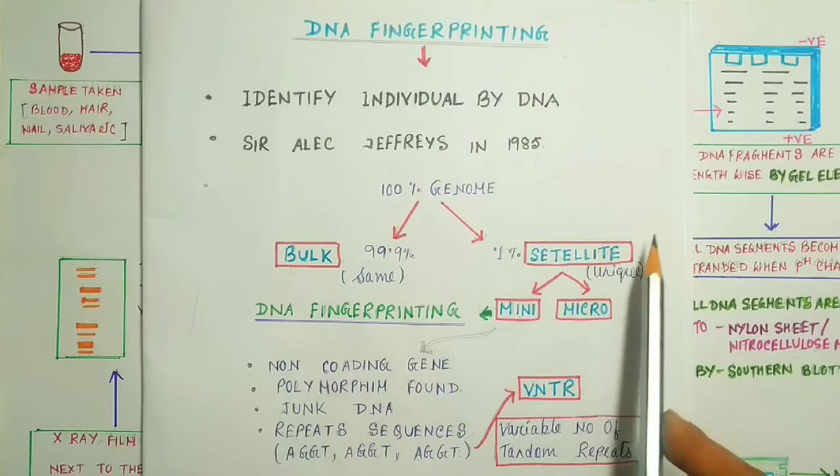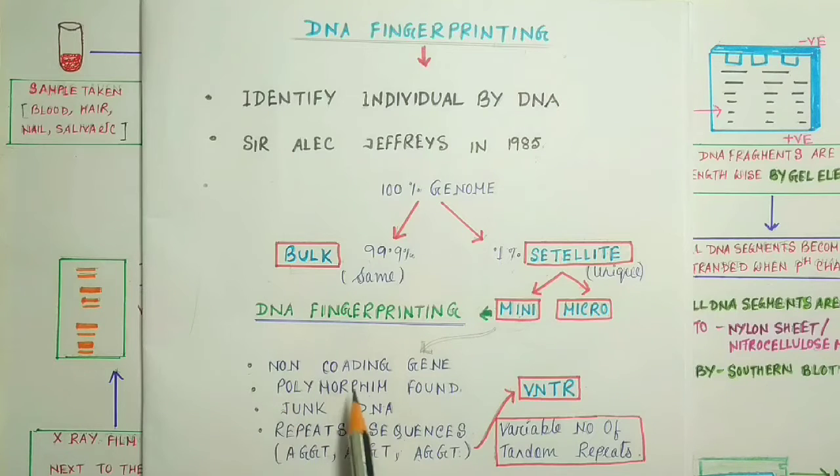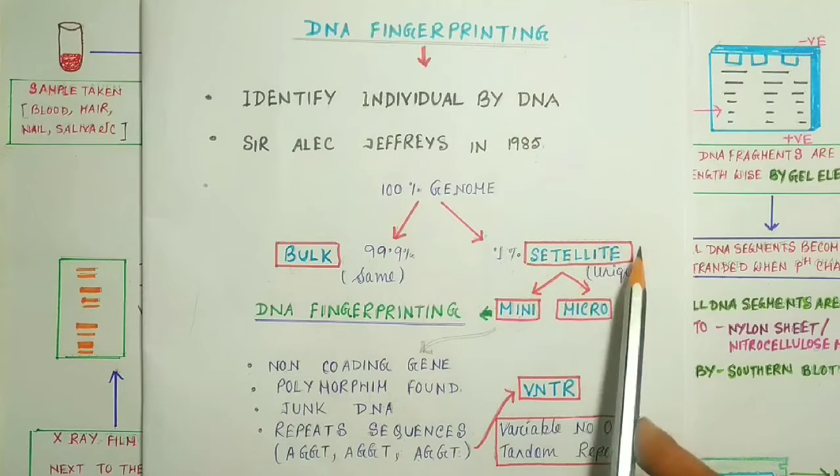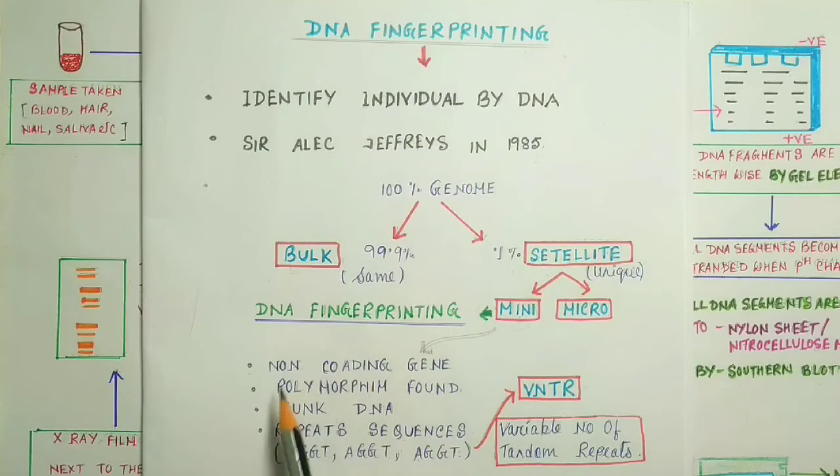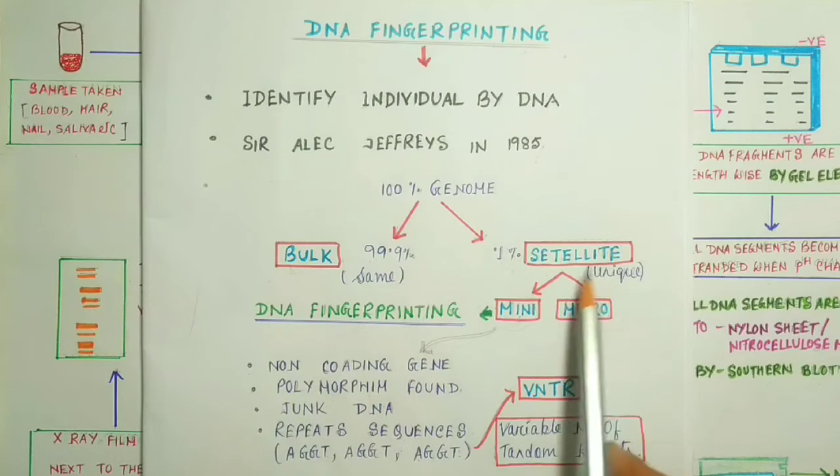The second point is polymorphism is found. Polymorphism means genetic level mutation. It means variations are seen within the satellite DNA. This variation occurs due to mutation in the genetic level, meaning variation occurs due to mutation in the nucleic acid which are the base pairs of DNA.